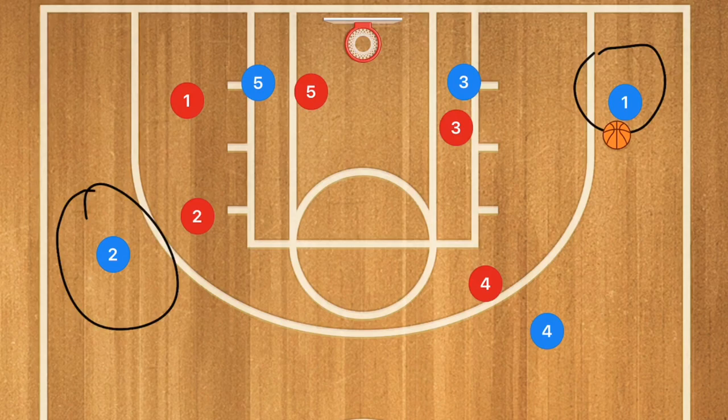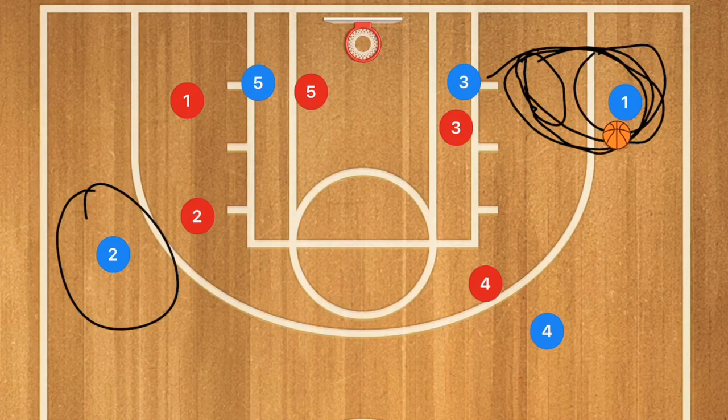This play alone got my shooting guard — a grade 8 player playing at the grade 9 level — 21 or 22 points in one game against Ancaster, all in the first half alone. We ran it over and over again, and it kept working.